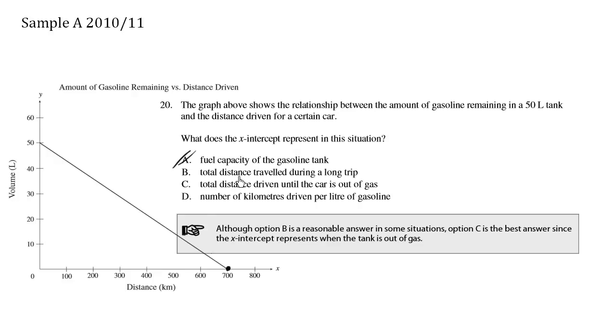B, total distance traveled during a long trip. Now it is true that we are traveling 700 kilometers, but when we look at the other choice, total distance driven until the car is out of gas, we can see the volume of gas dropping down to zero. This here is more specific, so choice C is much better.